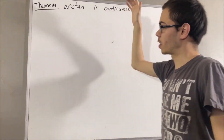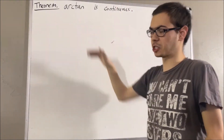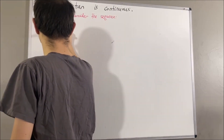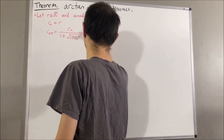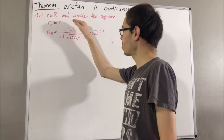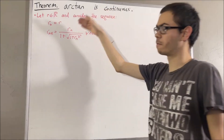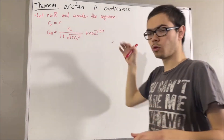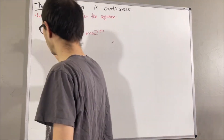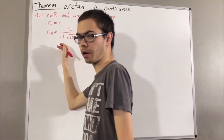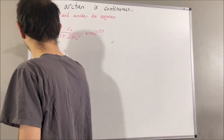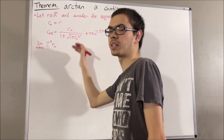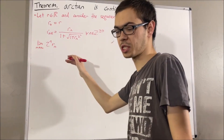First, let's remind ourselves of our definition of the arctangent function. Let R be any real number and consider the following sequence. We have shown that the sequence 2 to the n times Rn is convergent, and we define the value it converges to to be the arctangent of R.